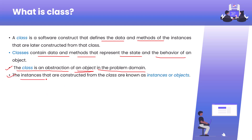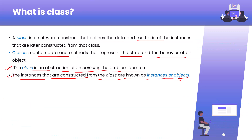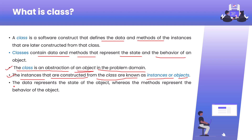The instances that are constructed from the class are known as instances or objects. So if someone asks what an instance or object is, you can say: instances that are constructed from a class are known as an instance or an object. I'll show you in a practical example how to create objects in a later point of this tutorial series.